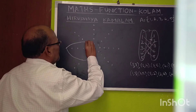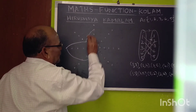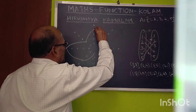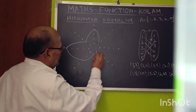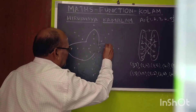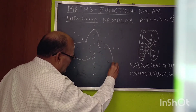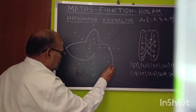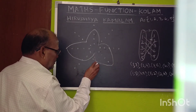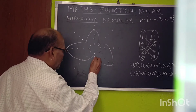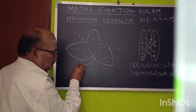Then 2 to 4 — counting 1, 2, 3, 4. Then 4 to 1. Again 1 to 3, 3 to 5, and 5 to 2, then 2 to 4, 4 to 1.